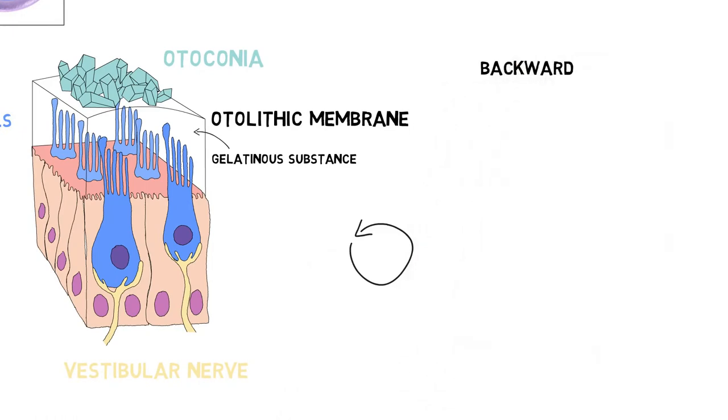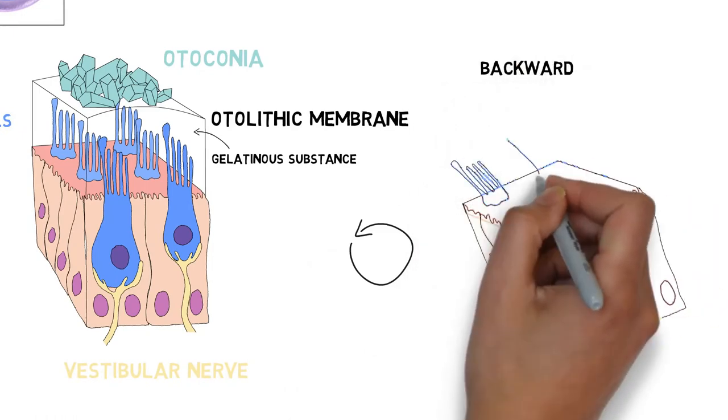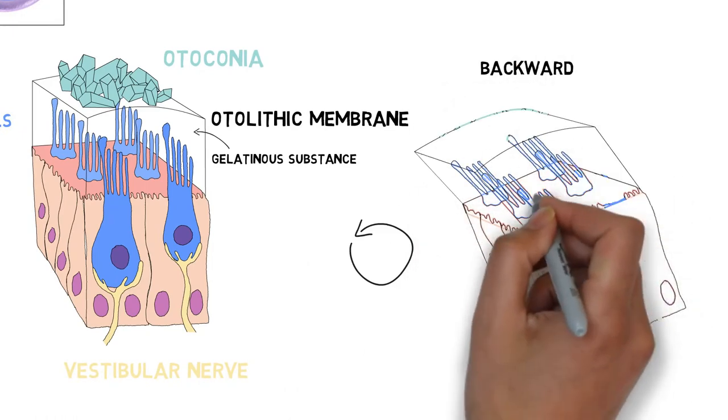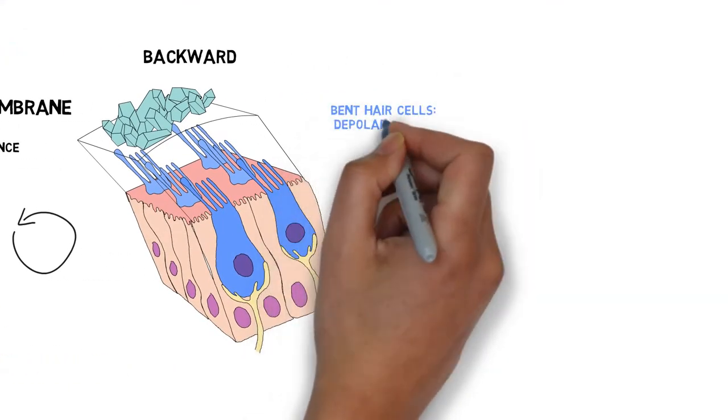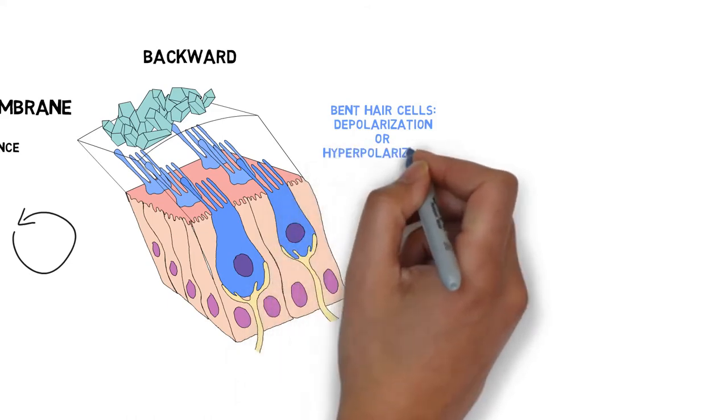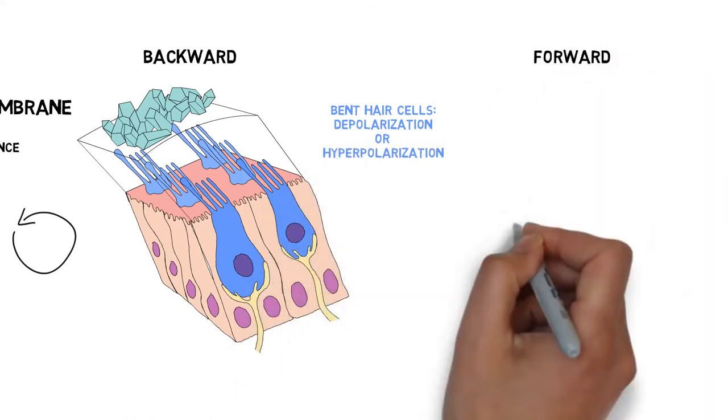If you tilt your head backward, the autoliths cause the hair to be bent backward as well. Depending on which side of the striola the hair cells are positioned, this will either depolarize or hyperpolarize the receptor's membrane. The opposite is true for tipping the head forward.